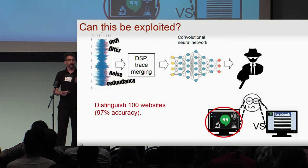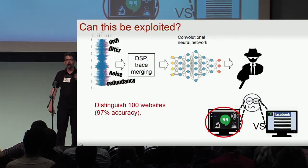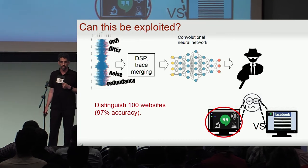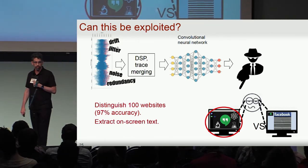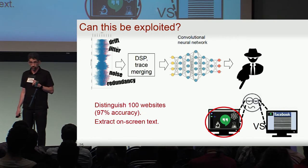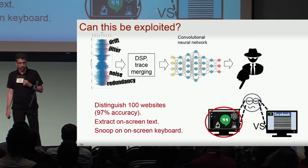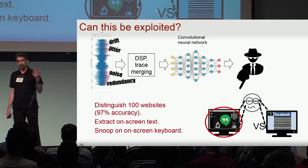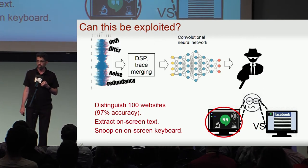We can this way distinguish not just the nature of the activity, but also which website is being browsed among a hundred websites with excellent accuracy. We can extract text that is rendered on screen, and in case the victim is typing on a virtual on-screen keyboard, we can extract the keystrokes.